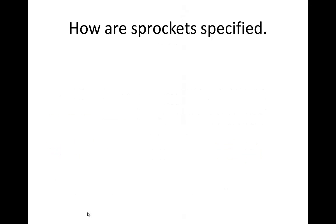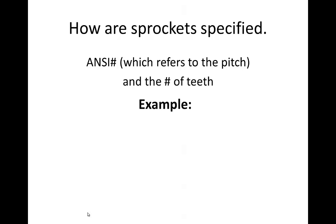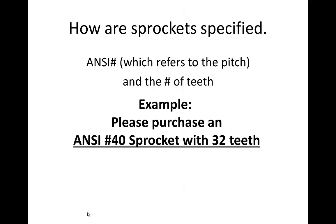It is important for engineers to know how standard sprockets are specified — or in other words, if you wanted to purchase a sprocket, how would you tell someone what you need? Sprockets are specified using the ANSI number, which refers to the pitch, and the number of teeth. For example, you might tell someone to please purchase an ANSI number 40 sprocket with 32 teeth.